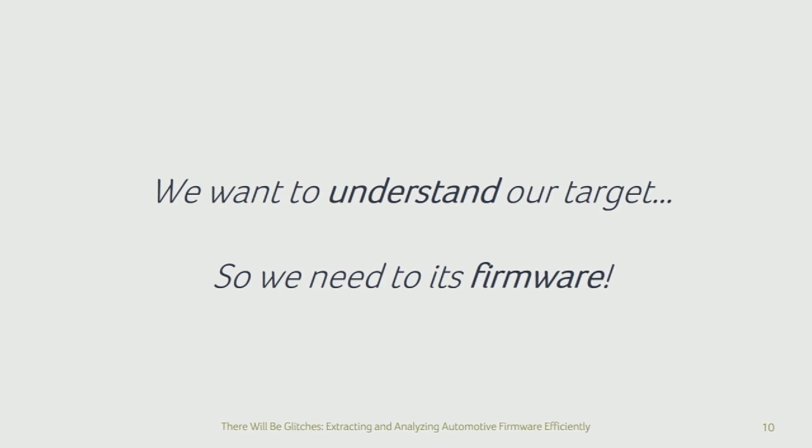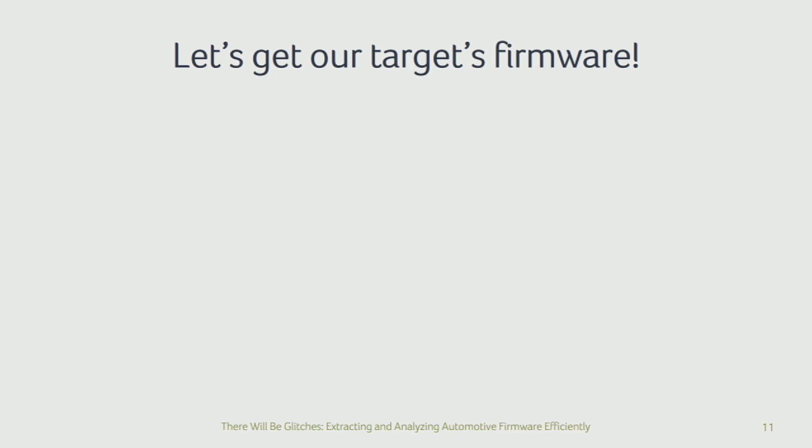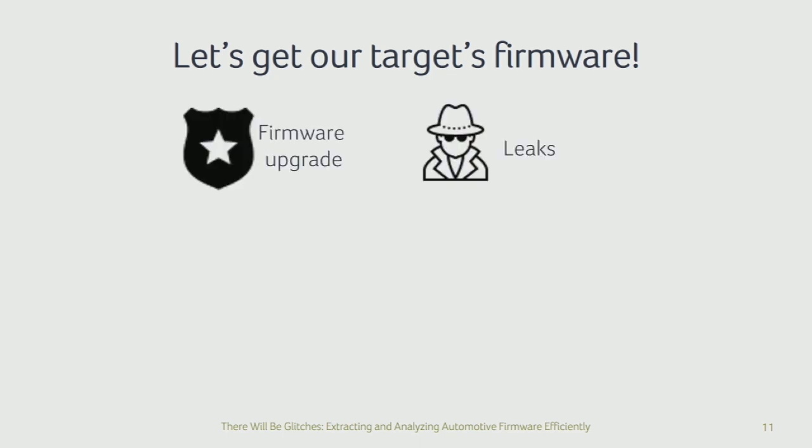We're talking about the first step of performing an exploit — getting an understanding of a particular target — and we need the firmware to do this properly. The easiest way would be if there's an official channel: for example, extracting the firmware from a firmware update, or simply downloading it from the internet. However, for the target in front of us, this was not the case. Nobody did the work and the official channels did not allow us access to the firmware.